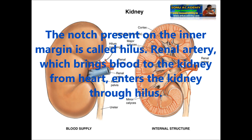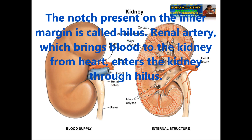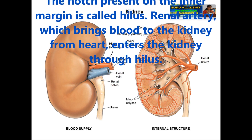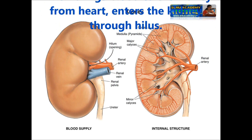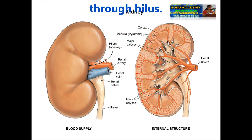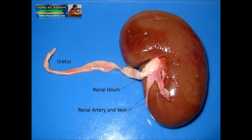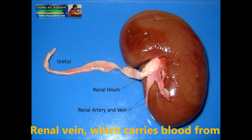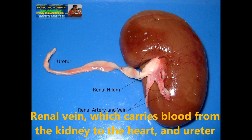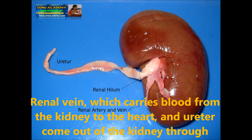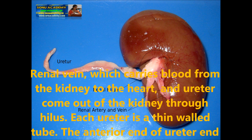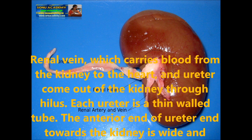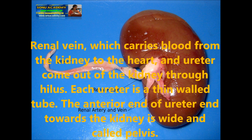The notch present on the inner margin is called the hilum. The renal artery, which brings blood to the kidney from the heart, enters the kidney through this hilum. The renal vein, which carries blood from the kidney to the heart, and the ureter come out of the kidney through this hilum.